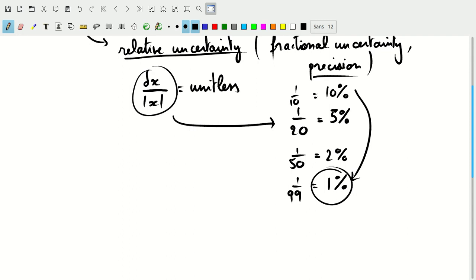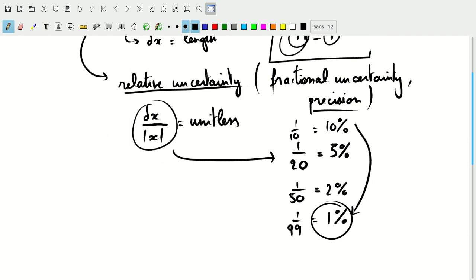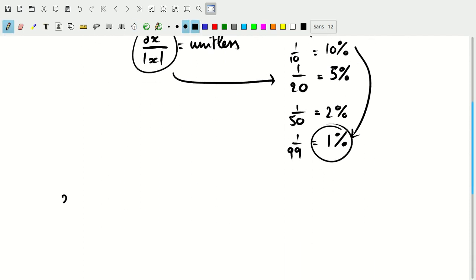So why are these relative uncertainties important? Well, we talked already about the absolute uncertainty, or we called it just the uncertainty—the uncertainty on the difference between two numbers. The uncertainty on x minus y was the square root of dx squared plus dy squared. Remember that.